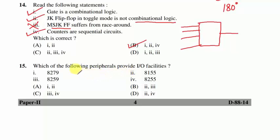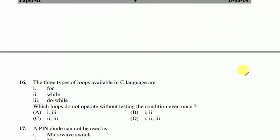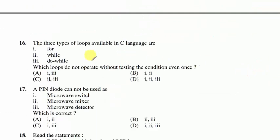Question 15: which peripherals provide I/O facilities? 8155 and 8255 provide I/O facilities — option D follows. In 8086 microprocessor, to interface with stepper motors, DC motors, or LED controllers, IC 8255 is used.